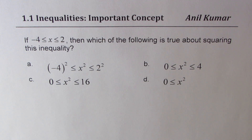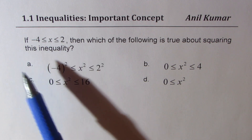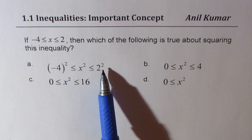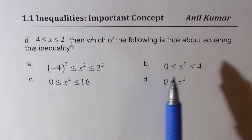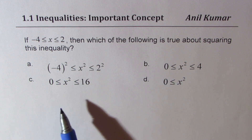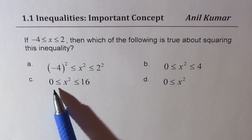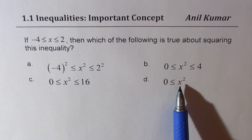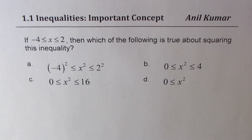I got similar questions from many other students as well. The question is: if X is greater than or equal to minus 4 and less than or equal to 2, then which of the following is true about squaring this inequality? There are four choices: is X squared between minus 4 squared and 2 squared, between 0 and 4, between 0 and 16, or just a positive value greater than or equal to 0?